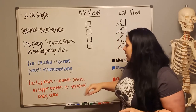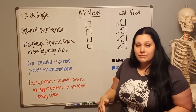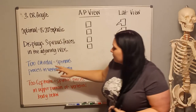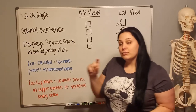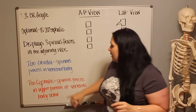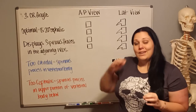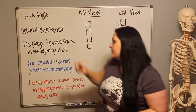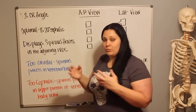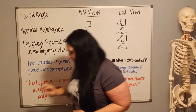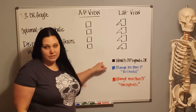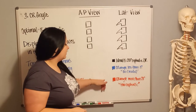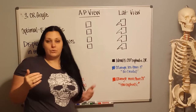What else can happen? You can angle your CR too caudal — anything below 15 degrees cephalic — or too cephalic, meaning anything above 20 degrees cephalic. When your CR angle is too caudal, that's going to place the spinous process within the vertebral body it's connected to. When it's too cephalic, it's going to project the spinous process into the upper portion of the inferior vertebral body.